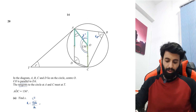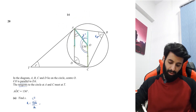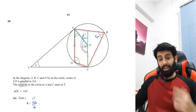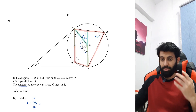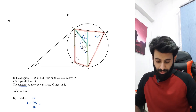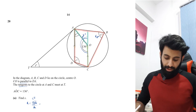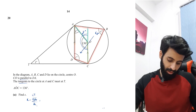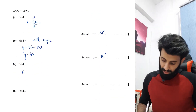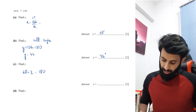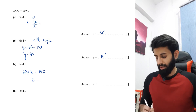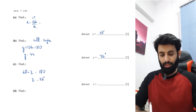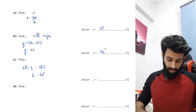Next, find Z. I'm looking at ABCD, which is a cyclic quadrilateral because all four vertices touch the circumference. Opposite angles are supplementary, so 68 plus Z equals 180 degrees, meaning Z equals 180 minus 68, which is 112 degrees.